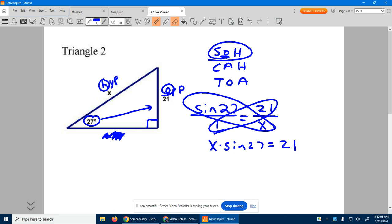To get X by itself, sine of 27 is just some number. So you're going to divide by that. We don't need to write what that number is, just divide by sine of 27.